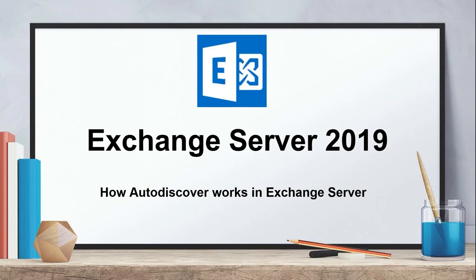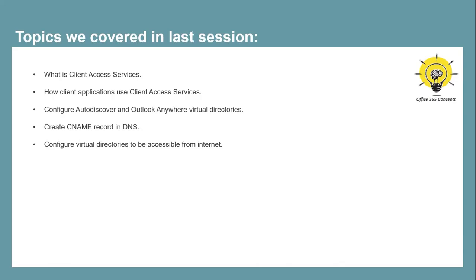Hi guys, I hope you all are doing well and welcome to the next video of this entire series of Exchange Server 2019. In the last video, we talked about client access services. We configured Autodiscover and Outlook Anywhere in our Exchange Server and we published Exchange services to the internet so that users can access these services from the external network.